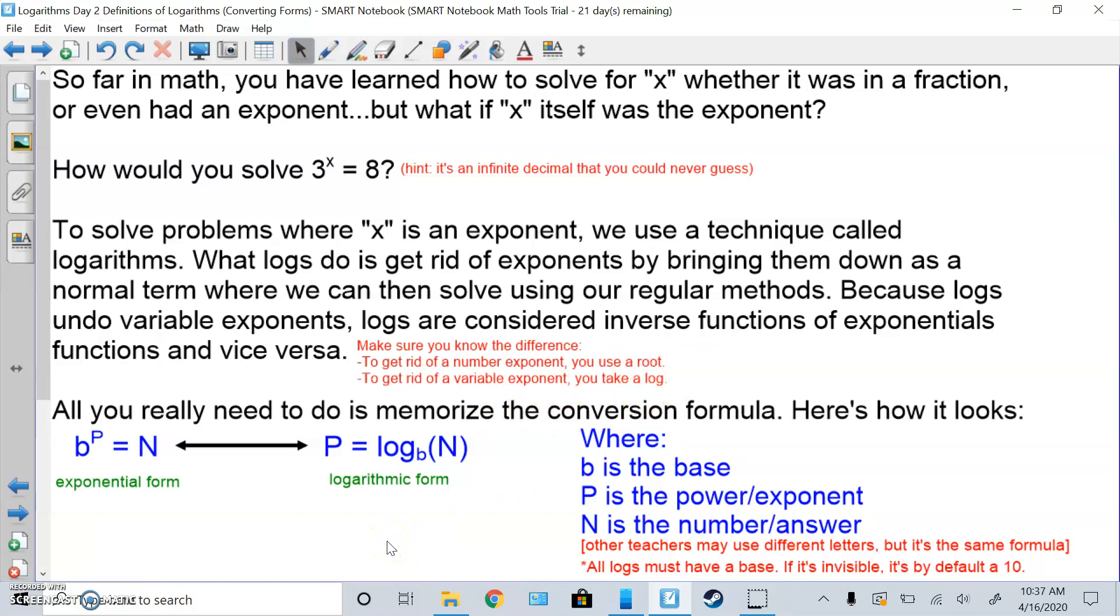So all you need to do is really memorize this conversion formula, here's how it looks. B to the p power equals N, which is exponential form because there's an exponent p, can turn into capital P, a power equals log base b of N. And it's called logarithmic form because the word log's there. So it goes back and forth. And the letter b stands for base, the letter p stands for power or exponent, and the letter n stands for the number or answer.